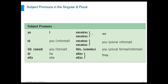Going over to the plural: nosotros or nosotras, depending on gender, means we. Vosotros or vosotras means you in the informal sense. Ustedes means you in the formal sense, in the plural. Ellos and ellas means they.